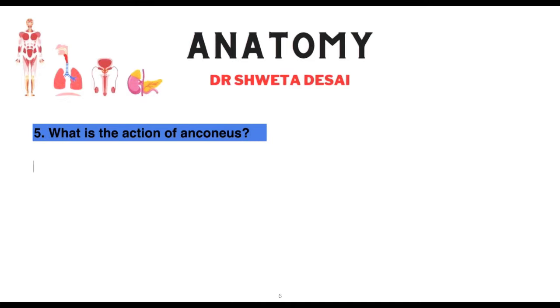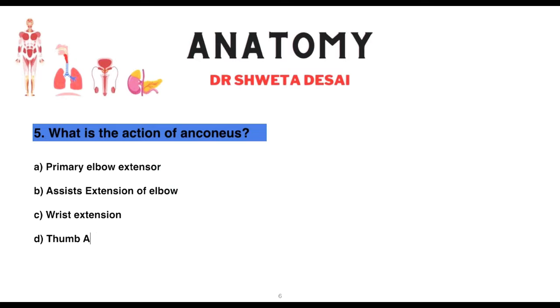What is the action of the anconeus muscle: primary elbow extension, assist extension of elbow, wrist extension, or thumb abduction? The anconeus assists extension of the elbow.